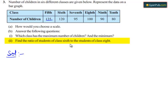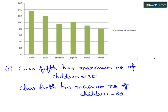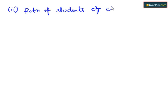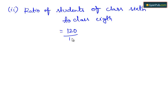For the second part, we need to find the ratio of students of class 6 to class 8. Referring to the bar graph, class 6th has 120 students and class 8th has 100 students. So the ratio of students of class 6th to class 8th equals 120 to 100, which simplifies to 6 is to 5.